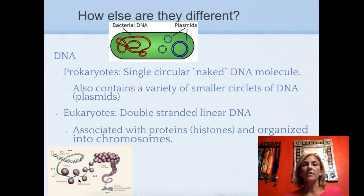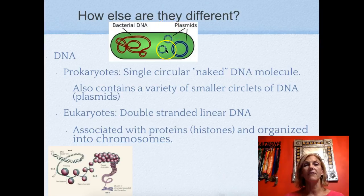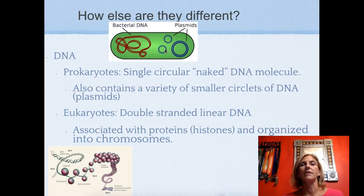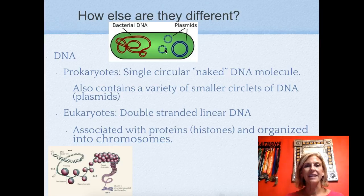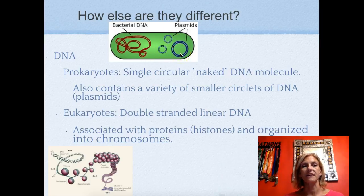Our DNA is wrapped around proteins which give it bulk before it becomes a chromosome. Something that prokaryotes have that we don't are plasmids. These plasmids give bacteria special features, like the ability to withstand penicillin — some resistance or special advantages are found on those plasmids.